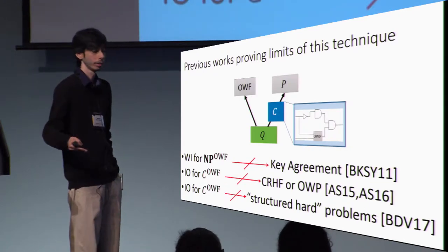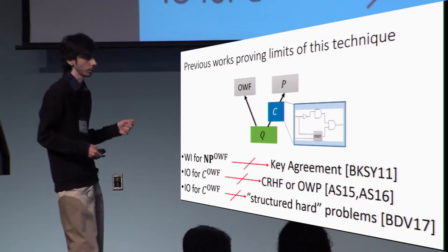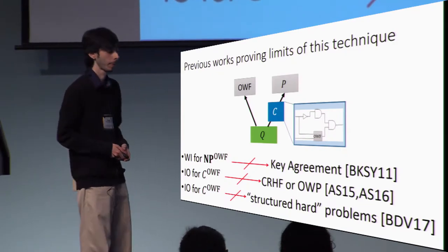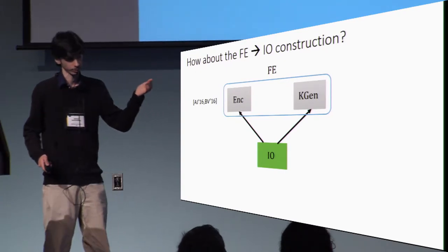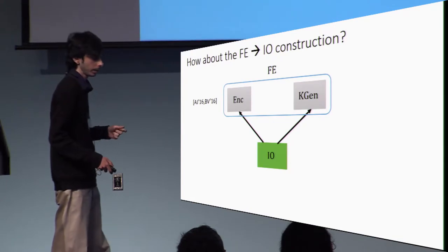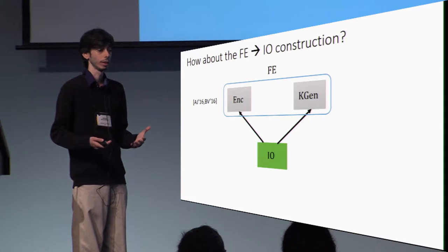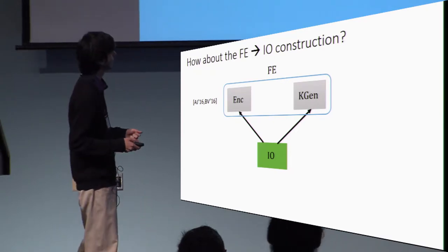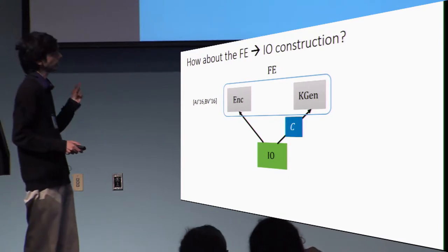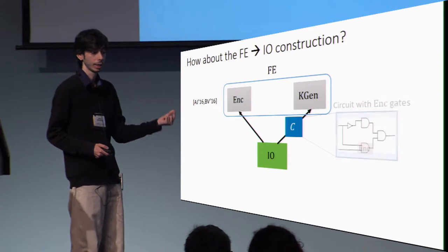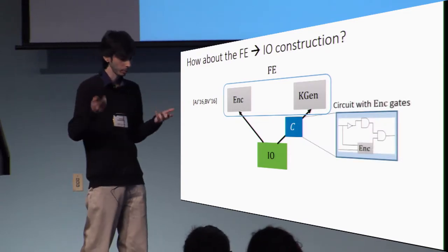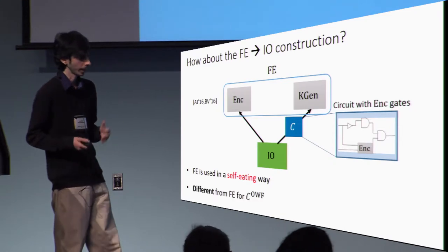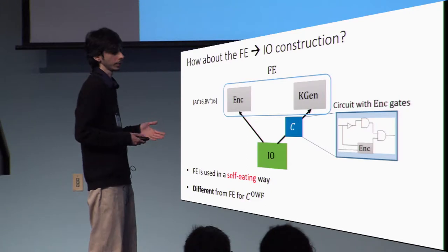As you'll see in the next talk, Brutansky et al. will show that I.O. for oracle-aided circuits with one-way function gates does not imply structured hard problems in NP-intersect co-NP. But what about the FE to I.O. construction due to Anant Jain and Brutansky-Vaikuntanathan? This construction does not fall under the model of circuits with one-way function gates. If you look at the construction, the I.O. actually feeds the key generation function of FE a circuit that contains encryption gates of the FE itself — so FE is being used in a self-eating way. This does not fit the previous models.